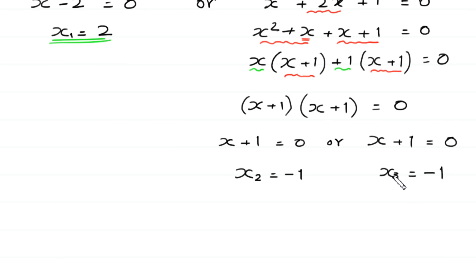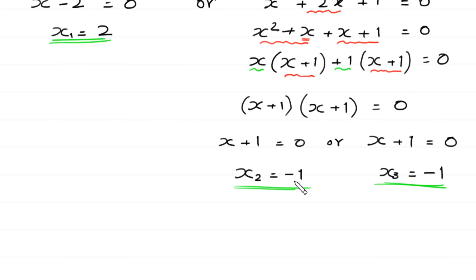Now, x plus 1 is a common factor, so we factor it out: x plus 1 times x plus 1 equals 0. From here, either x plus 1 equals 0 or x plus 1 equals 0, giving x equals negative 1 in both cases. So we have three solutions: x₁ equals 2, x₂ equals negative 1, and x₃ equals negative 1.